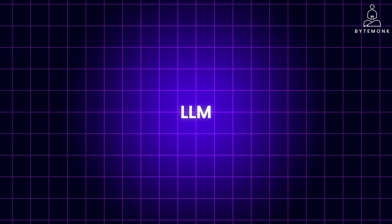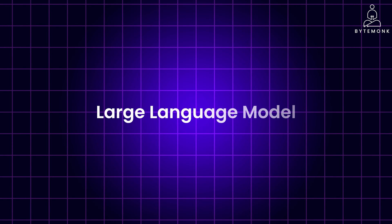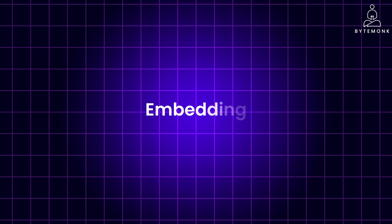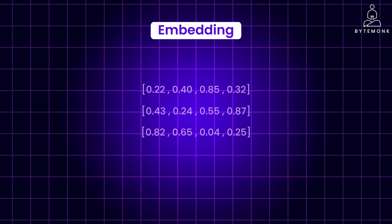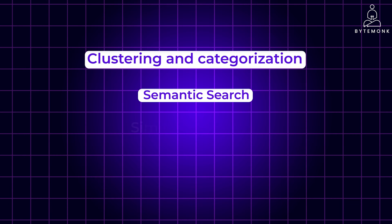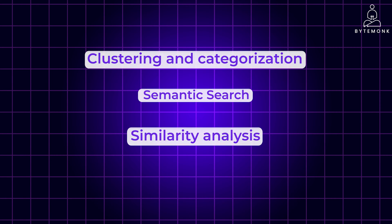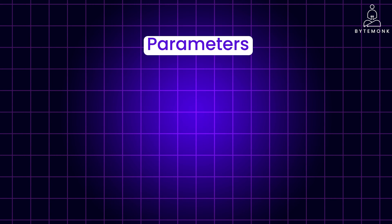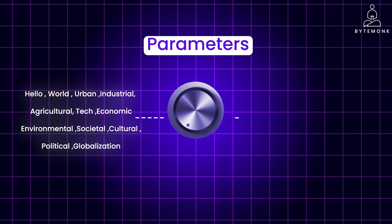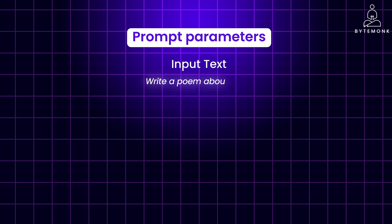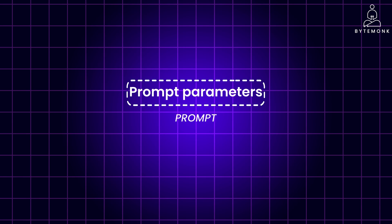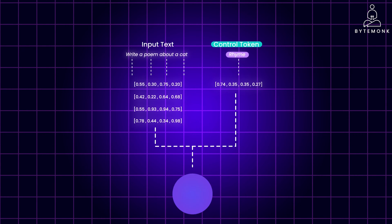In a previous video of the LLM series, we continued our journey into the world of large language models, exploring key concepts like embeddings and their practical applications. We discussed how embeddings serve as numerical representations of text, enabling semantic search, recommendation systems, clustering and similarity analysis. We also delved into the significance of parameters in LLMs. In this video, we will further delve into the nuances of parameters, especially prompt parameters, and understand some of the basics of prompt engineering.